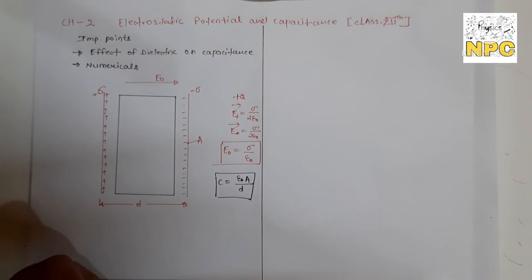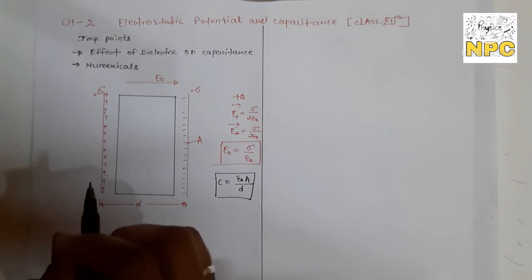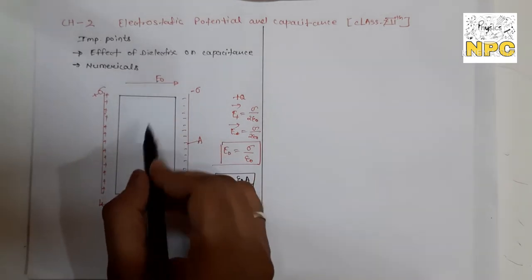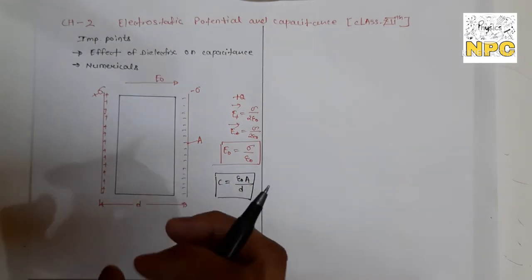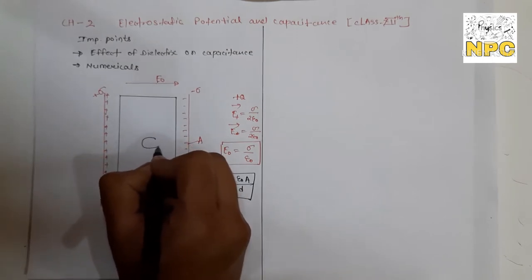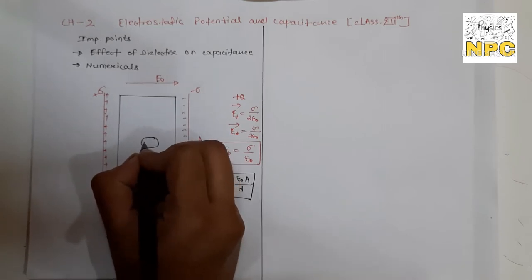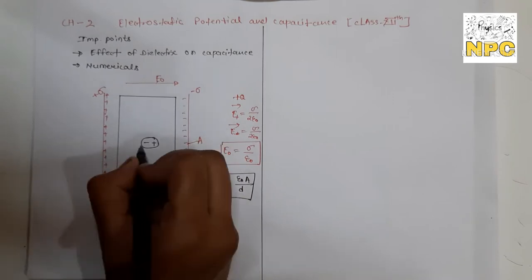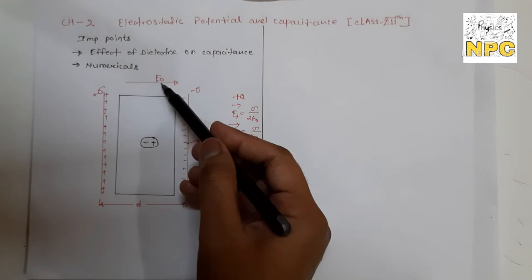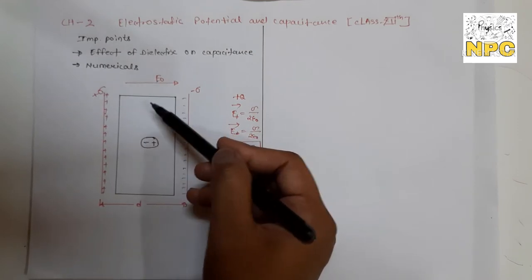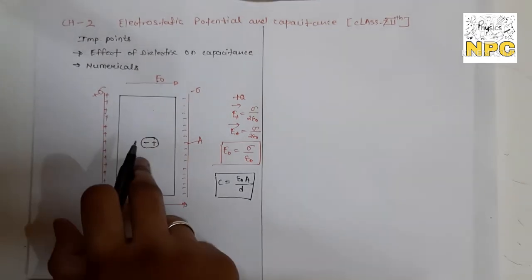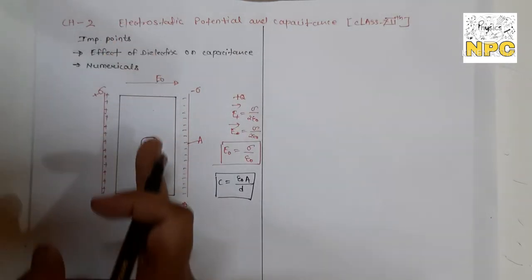Now, when we insert a dielectric medium between the plates, the molecules in the dielectric become polarized due to the external electric field. Polarization means the positive and negative charges within each atom/molecule get separated - the molecule has a negative side and a positive side.